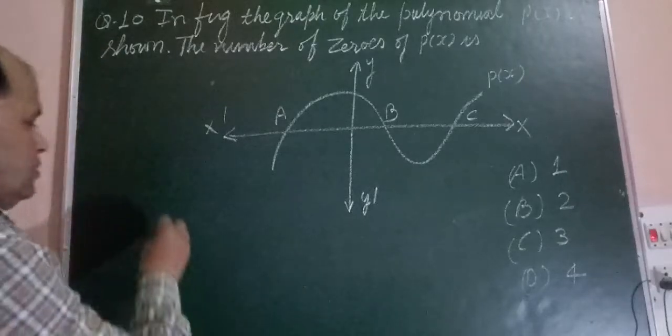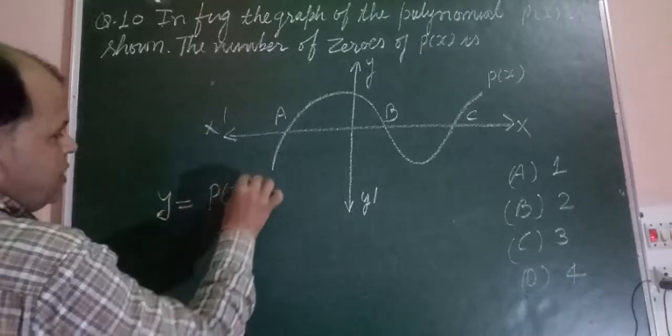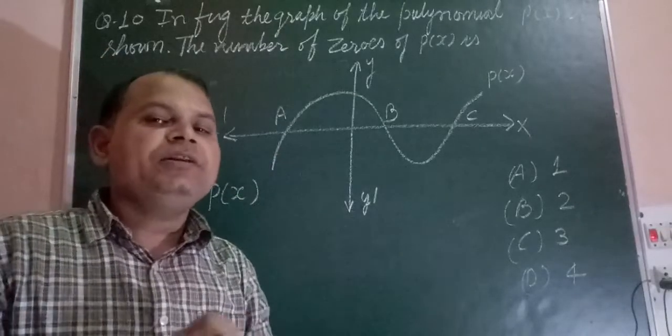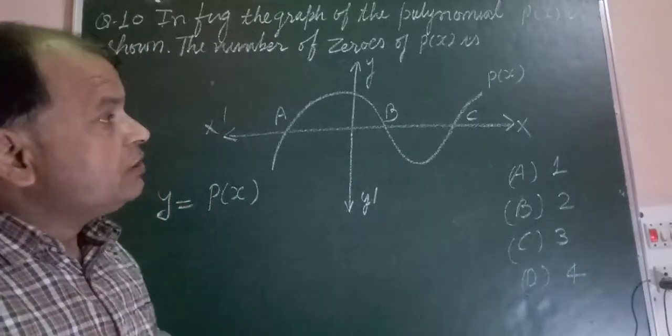As you know, a polynomial y = P(x) cuts the x-axis a certain number of times, giving the solutions or zeros of the polynomial.